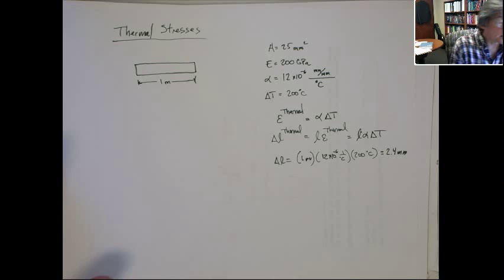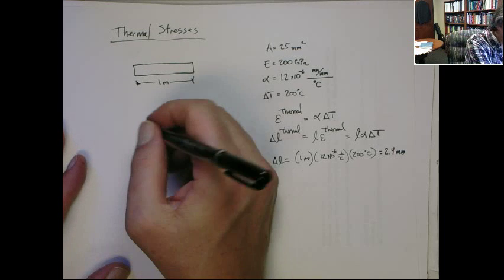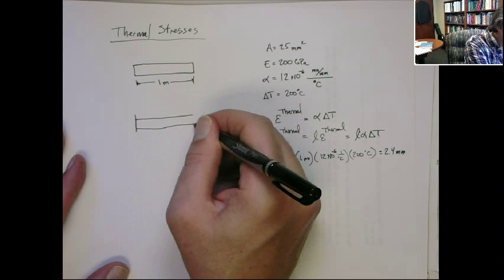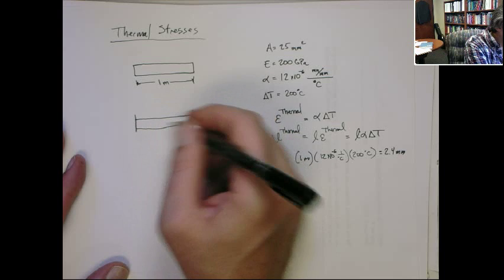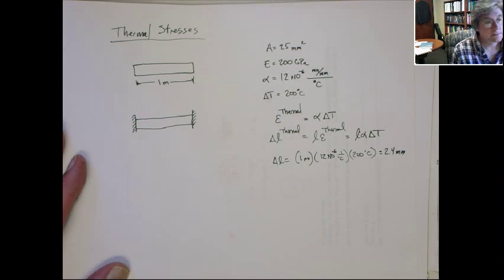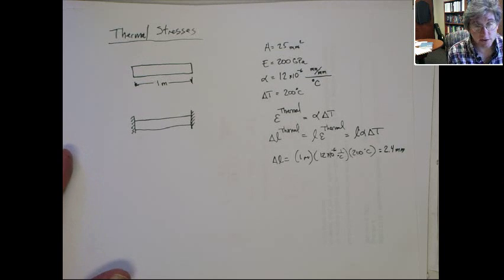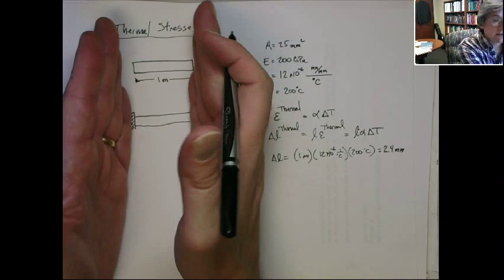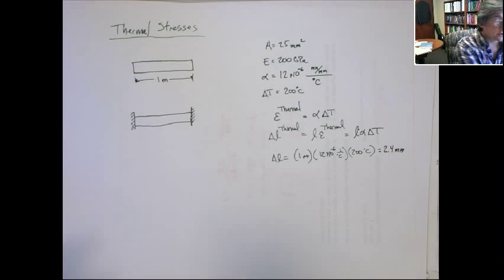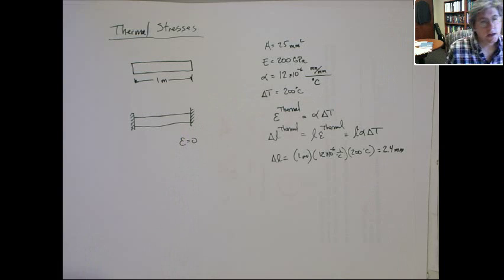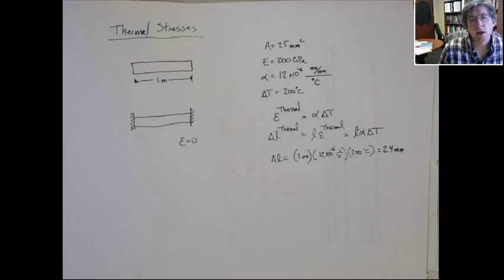Now, if we take actually the same bar, and give it the same temperature change, let's change the boundary condition, you get a different thing. Take the same bar, and now instead of it just sitting on top of the table, let's imagine it's fixed at both ends. Still is one meter, all the other properties the same. Still sees the temperature change of 200 degrees Celsius. Now, these ends are fixed. Now, these ends are fixed, so the strain obviously has to equal zero at the end. So what's going on?